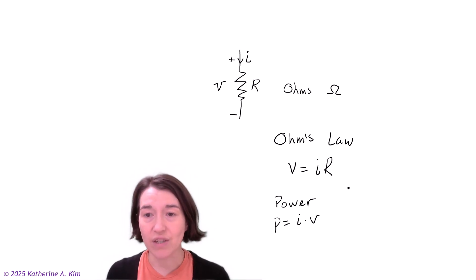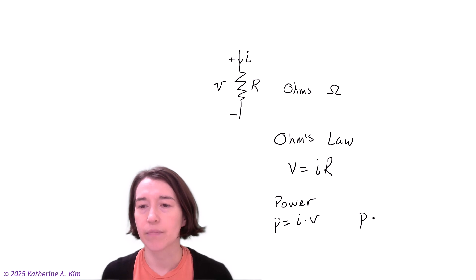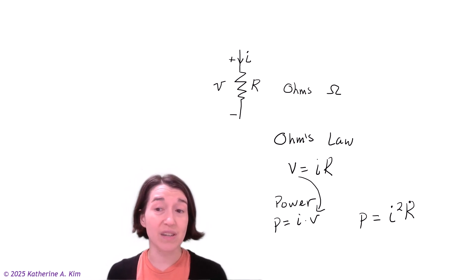For a resistor, we can substitute voltage to get I times I times R, which is I squared R. So if I know the current through a resistor and its resistance, I can directly tell you the power.